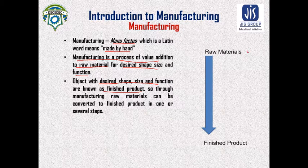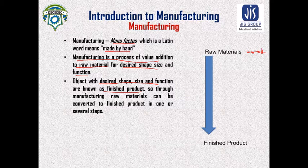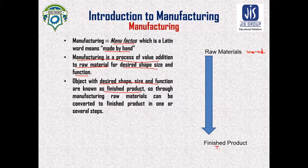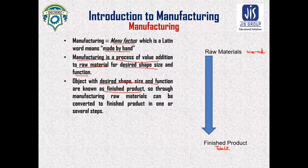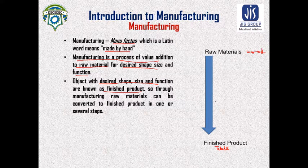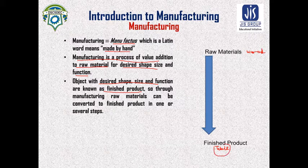For example, if we have raw material such as wood, from wood we want the finish product — we desire a table. So from a wood block, if we are getting a table by some process, this table is our finished product — our desired product.